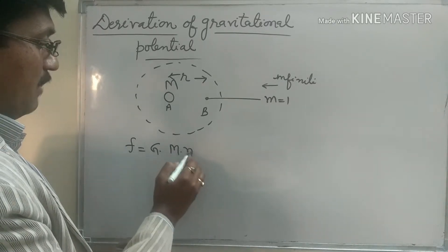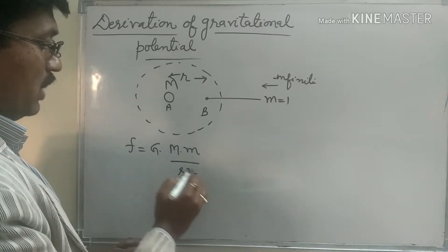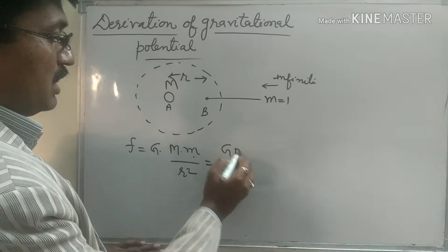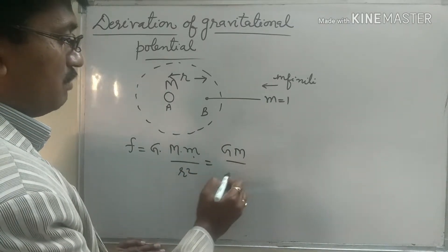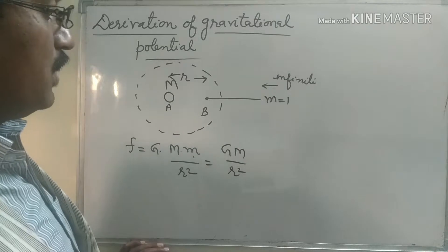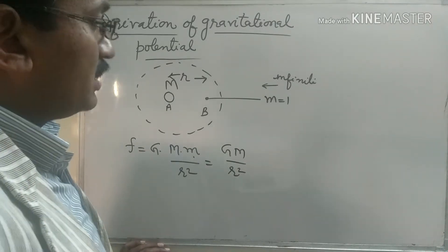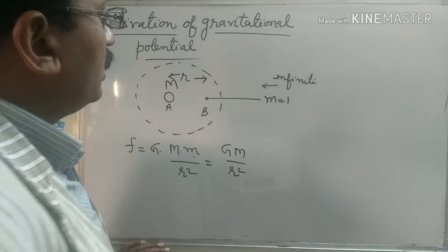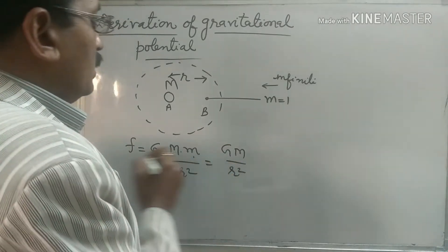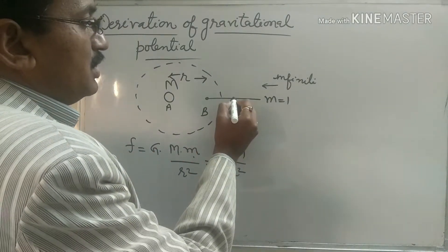The force of attraction on this unit mass should be GM upon r squared. Since this mass is a unit mass, we can write the force as GM upon r squared. This is also known as the force of attraction or gravitational attraction. Now we want to determine the work done, or gravitational potential.